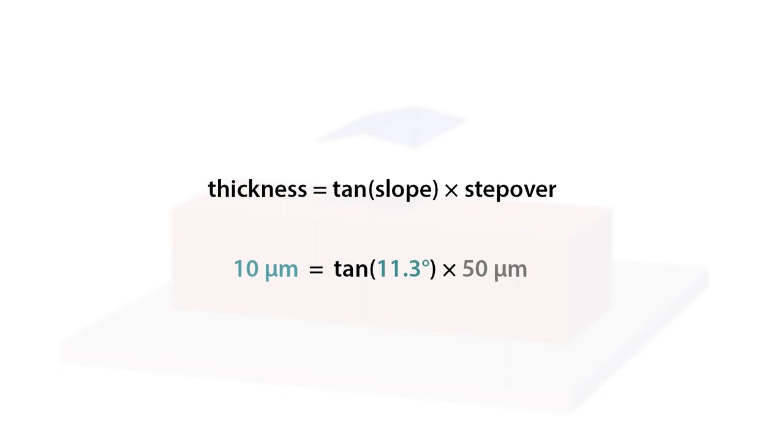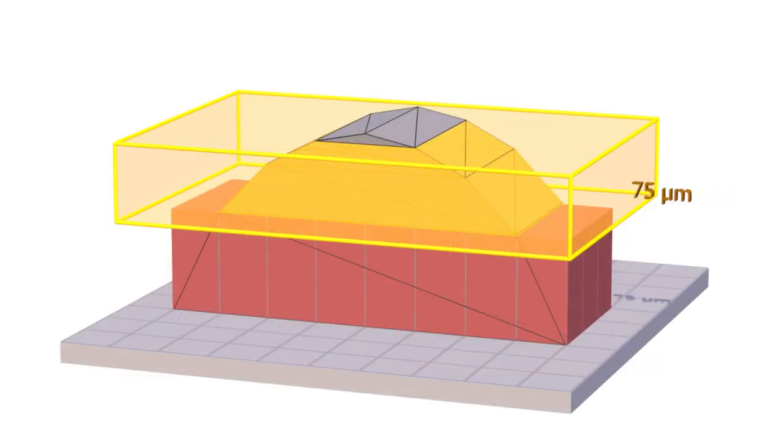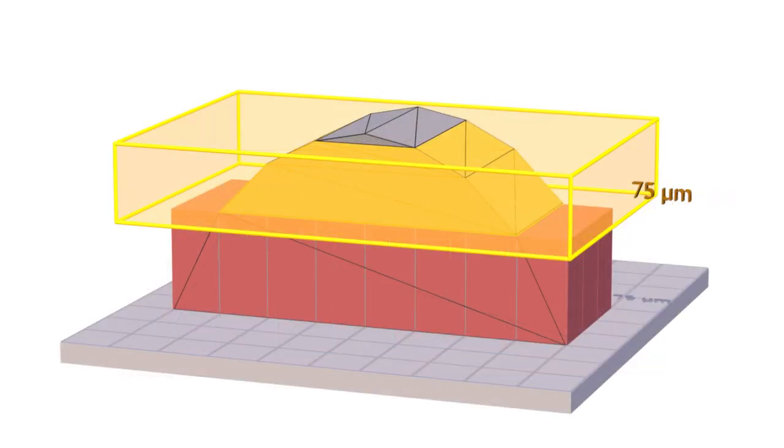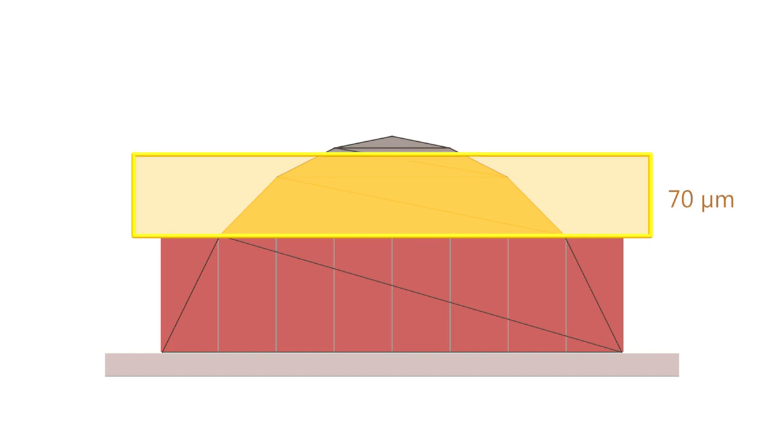But instead of jumping right to it, let's take an iterative approach. We'll step our window down from 100 to 95 microns. Same result, not good enough. So step down to 90, still no good, 85, nope, 80, nope. But look what happens when the window is 75 microns tall. The topmost triangles are no longer inside the window, and now the smallest slope is 26.6 degrees. So that's what we'll test. It's still not good enough, so we keep stepping down the window height.